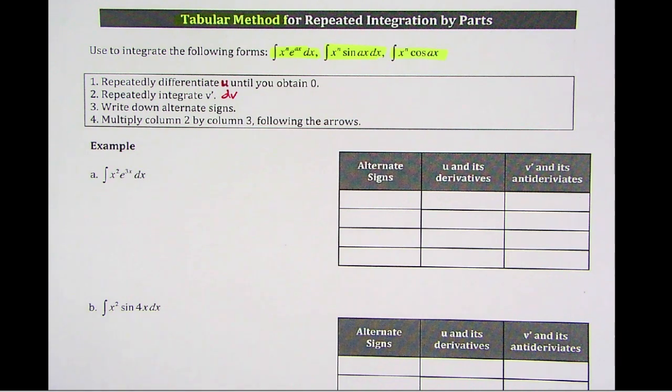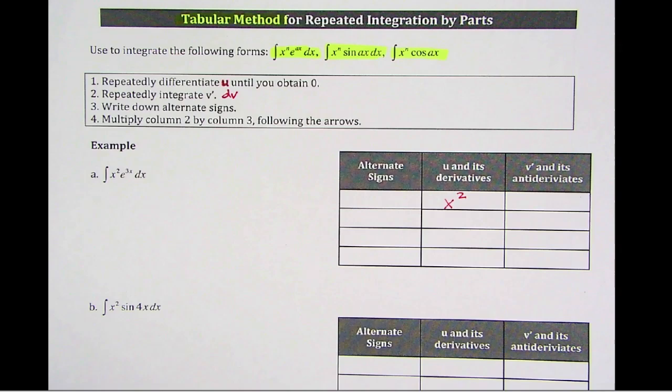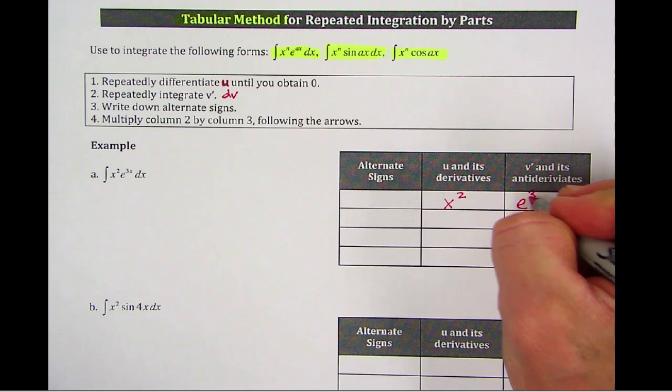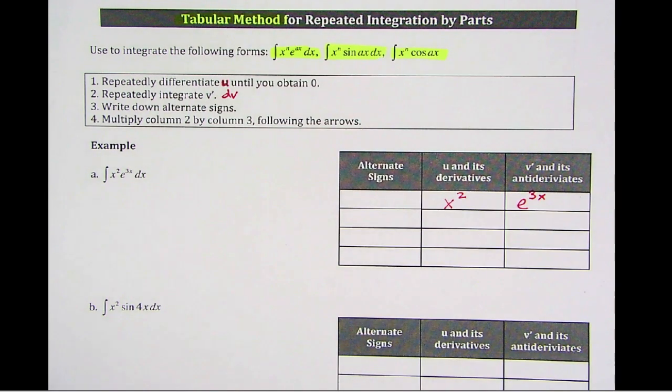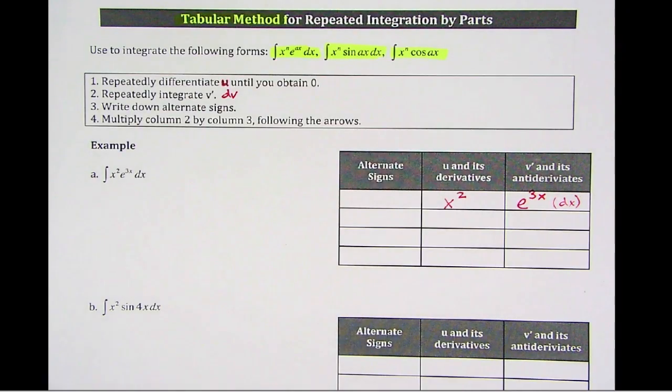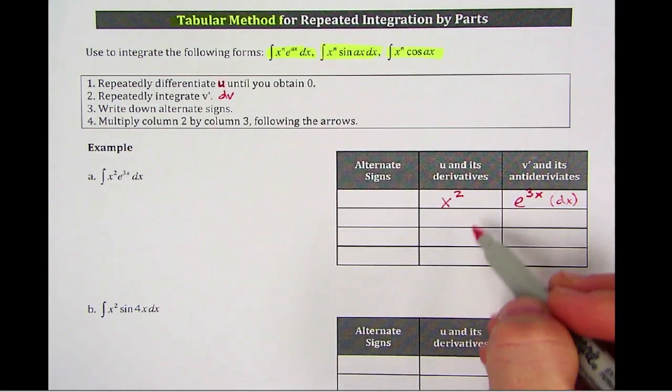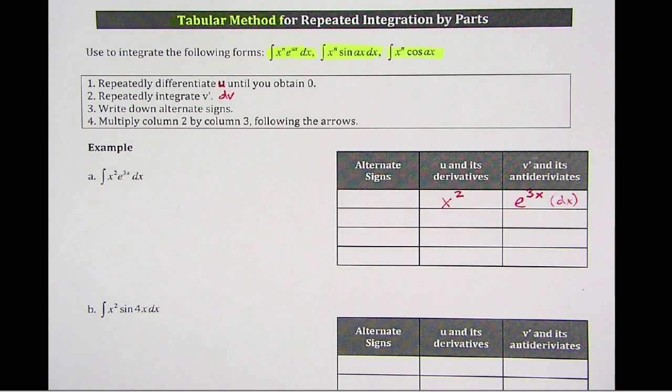And so here, our first example is the integral of x squared times e to the 3x dx. So we still want to find u and dv. So u in this case is going to be x squared. And dv is e to the 3x. Now for the ease of this, we're not actually going to write our dx. We're just going to assume it's there all the time. When they ask you for what dv is, you do want to write it. But in the tabular method, this is just for speed and ease of use, and then the final answer is what we're looking for.